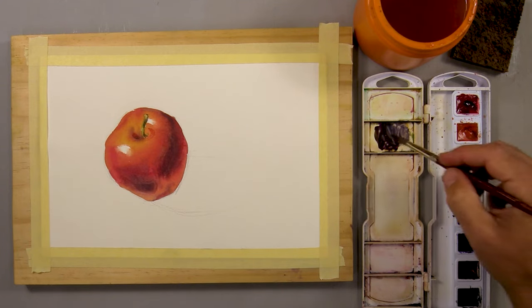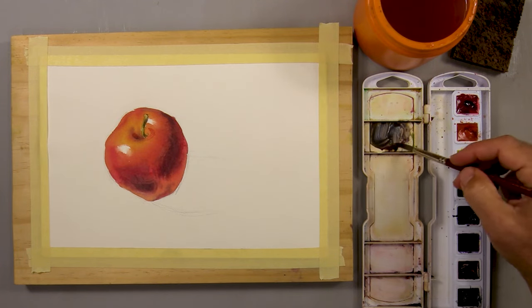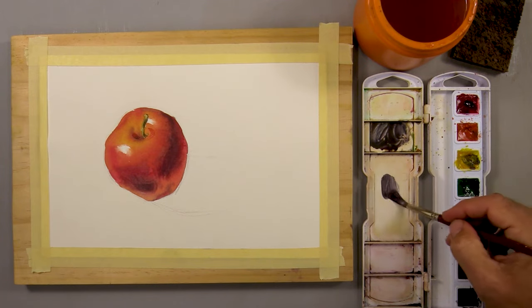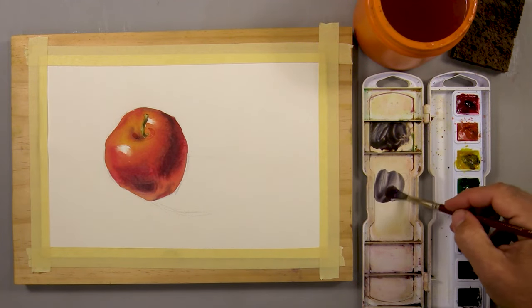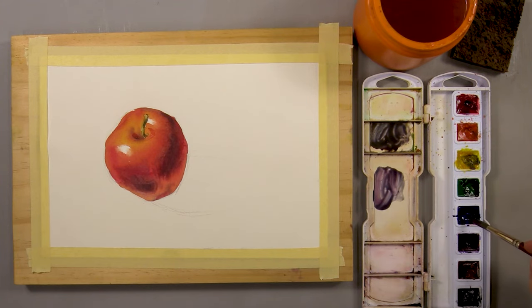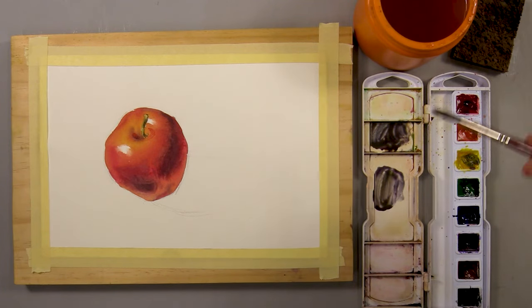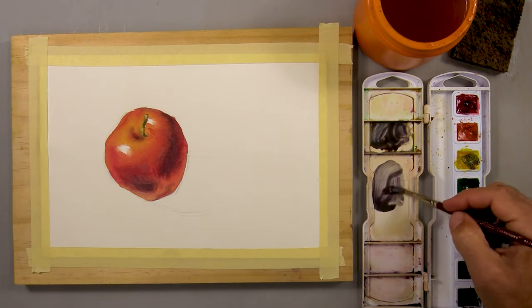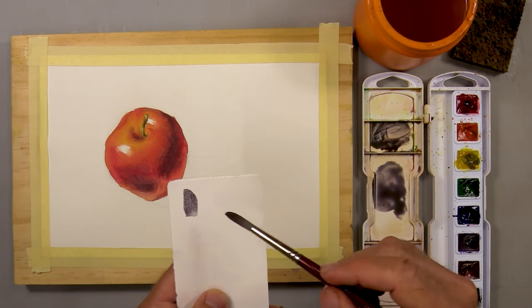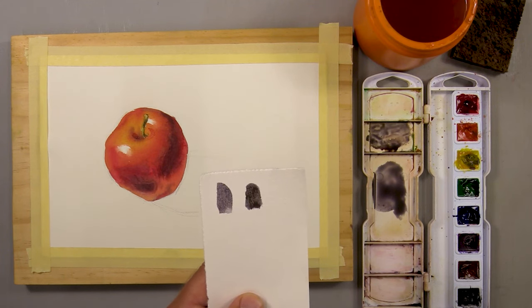My top mixture is the darkest. For this I use less water and more pigment. My bottom color on the palette is going to be my middle tone or lighter shadow color. This has more water in and even slightly more blue. I'll test those colors out on a piece of scrap paper to see how they look. That looks pretty good to me.